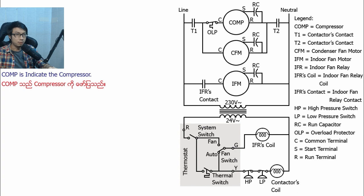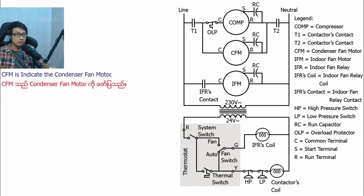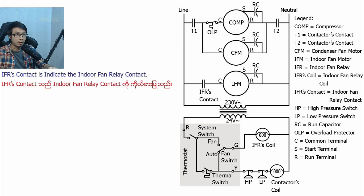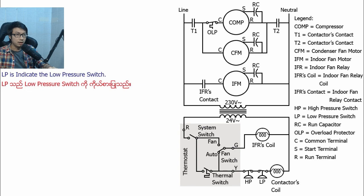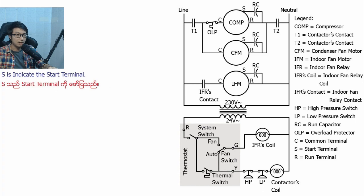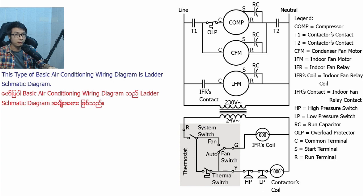COMP is the compressor. T1 is contact terminal 1. T2 is contact terminal 2. CFN is condenser fan motor. IFN is indoor fan motor. IFR is indoor fan relay. IFR coil is indoor fan relay coil. IFR contact is indoor fan relay contact. HP is high-pressure switch. LP is low-pressure switch. RC is run capacitor. OLP is overload protector. C is common terminal. S is start terminal. R is run terminal. This type of basic air conditioning wiring diagram is a ladder schematic diagram.